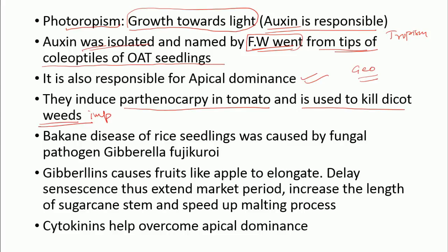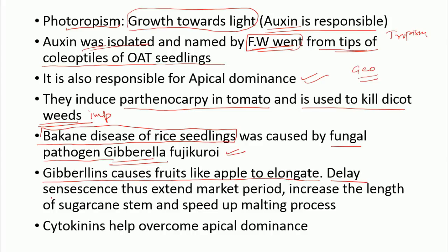Auxin is used to kill dicot weeds. Gibberellin causes bakanae disease and was isolated once. It causes fruits like apple to elongate. Gibberellin delays senescence, which increases the market period so fruits stay fresh longer. Gibberellin also increases the stem length of sugarcane, which is very important, and it speeds up the malting process.